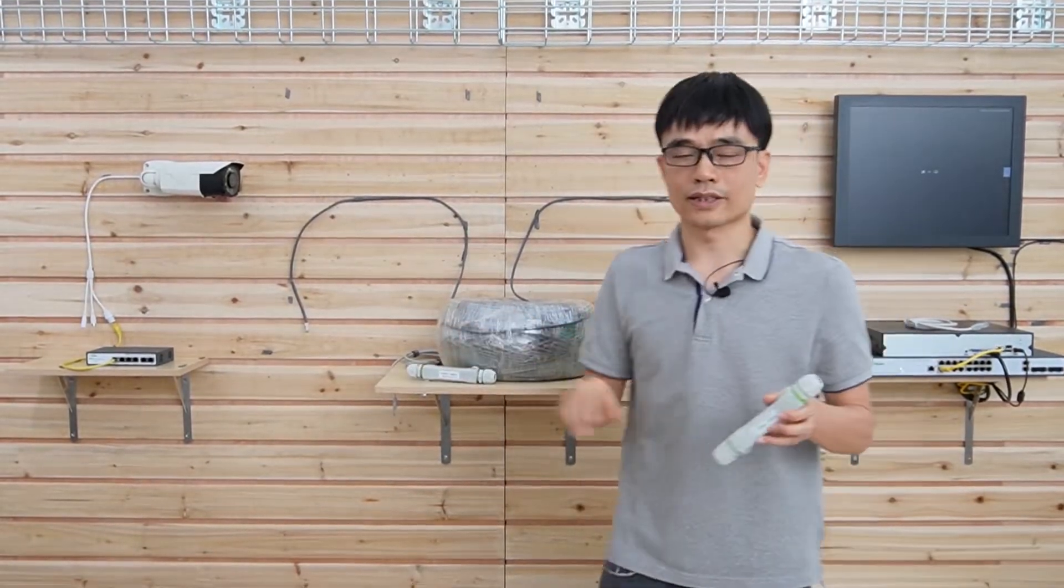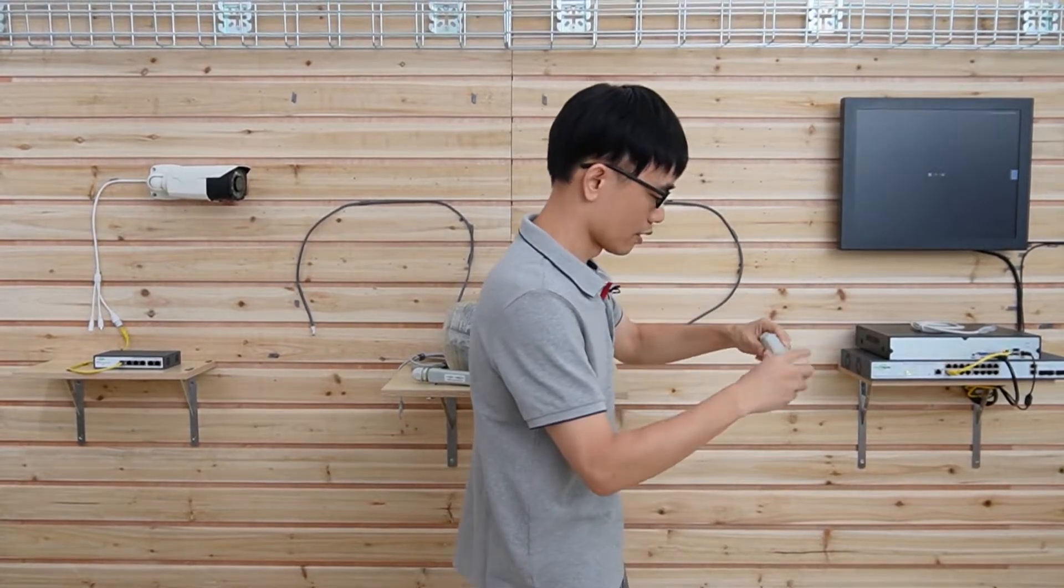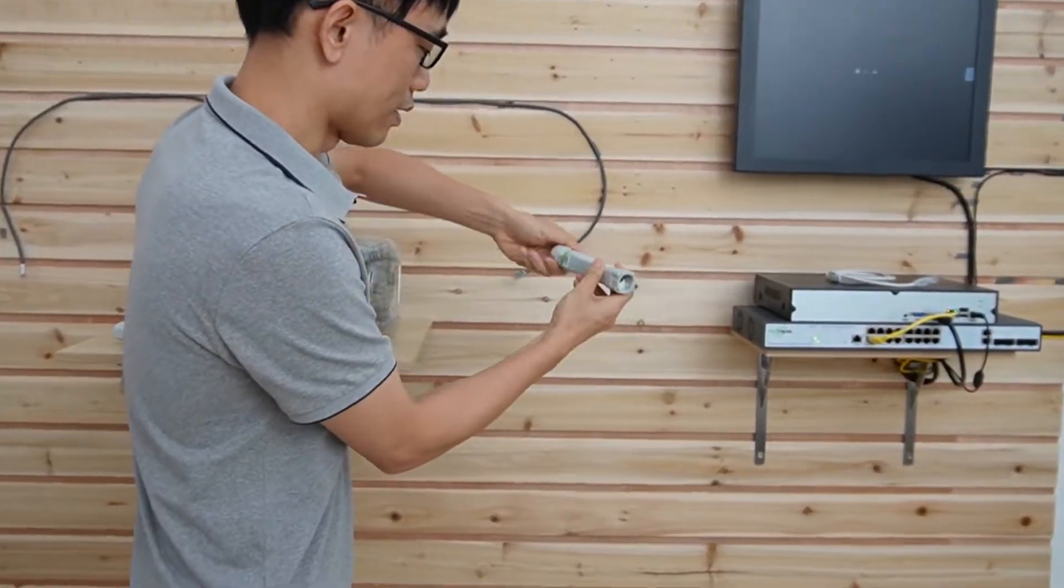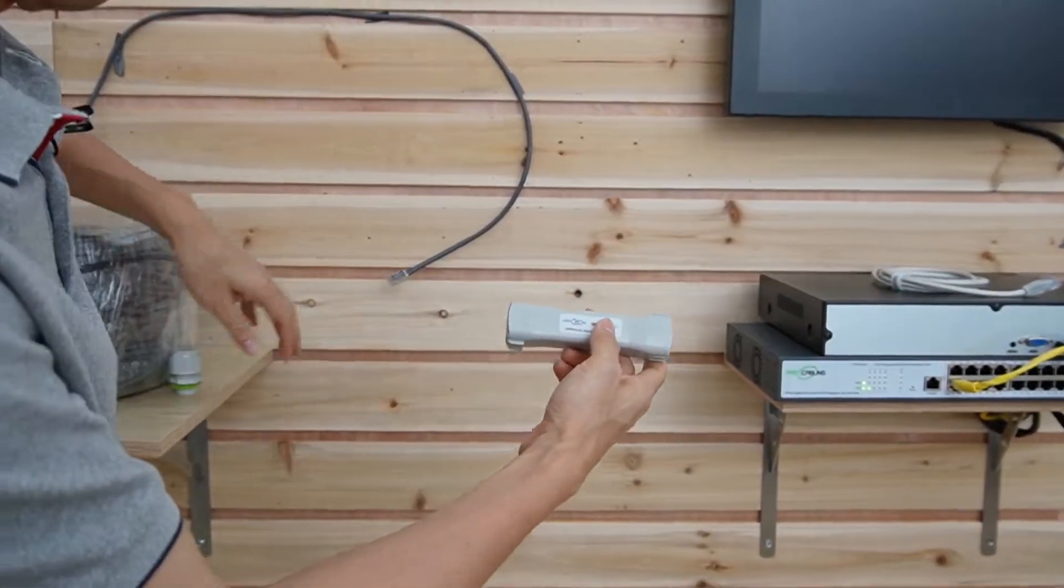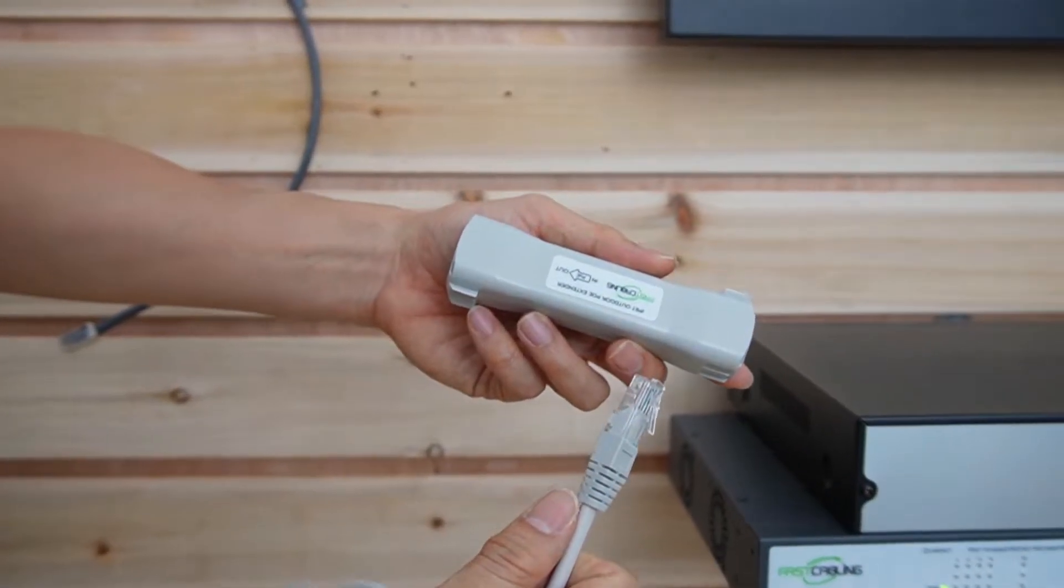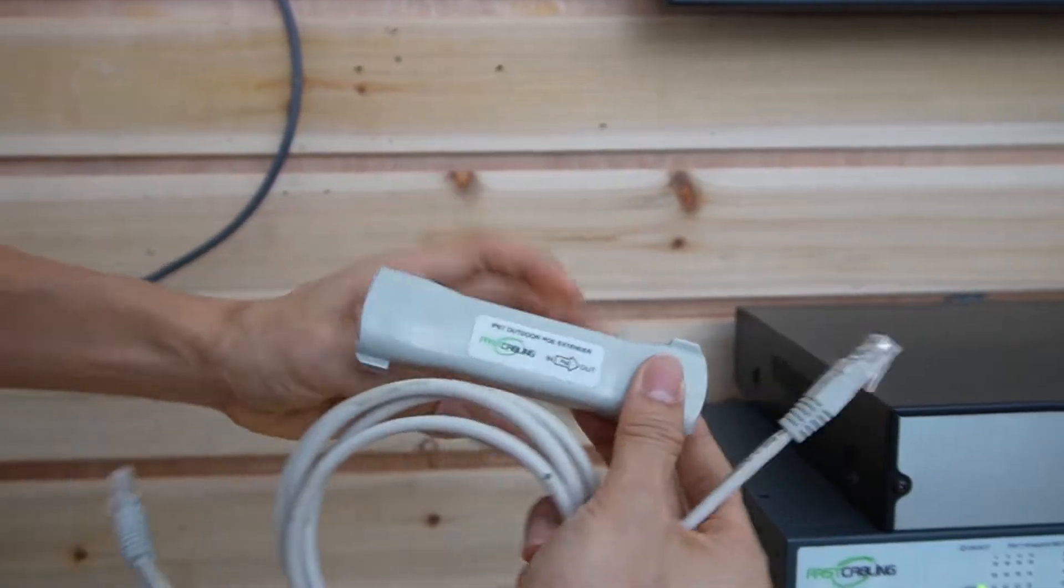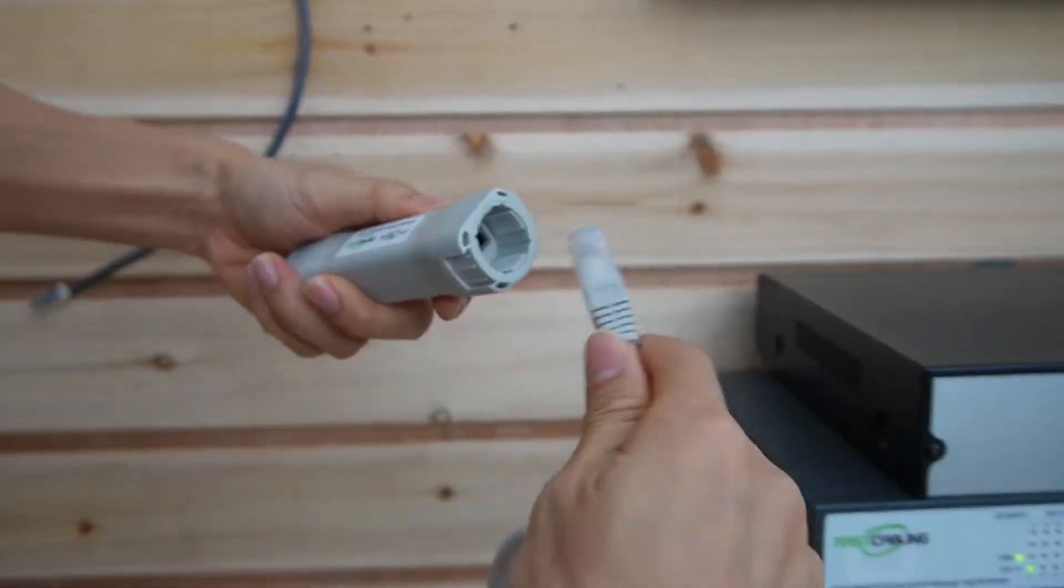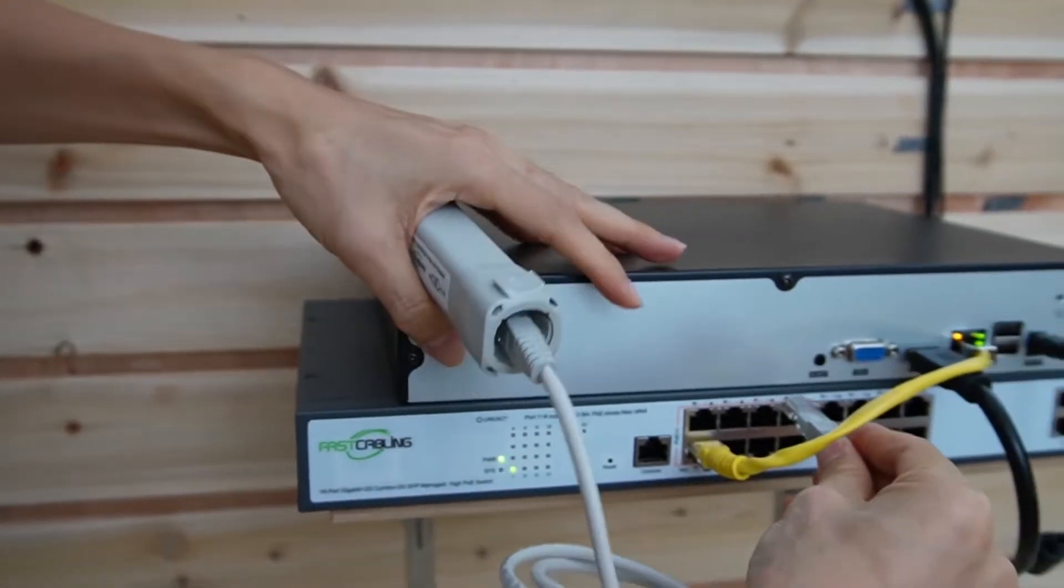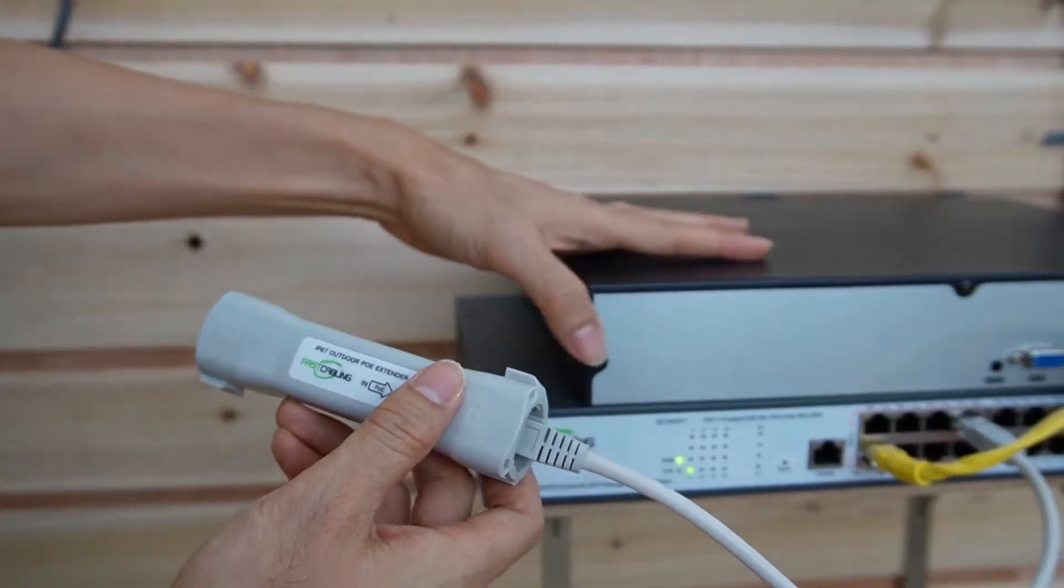First thing, let's make the connection for the first PoE extender. We are going to add this PoE extender. It's very important to flip the input and output when we try to have the 1,000-feet connection. So the output will face to the PoE switch. I'm going to connect to port number 8. I just configured port number 8 as trunk.